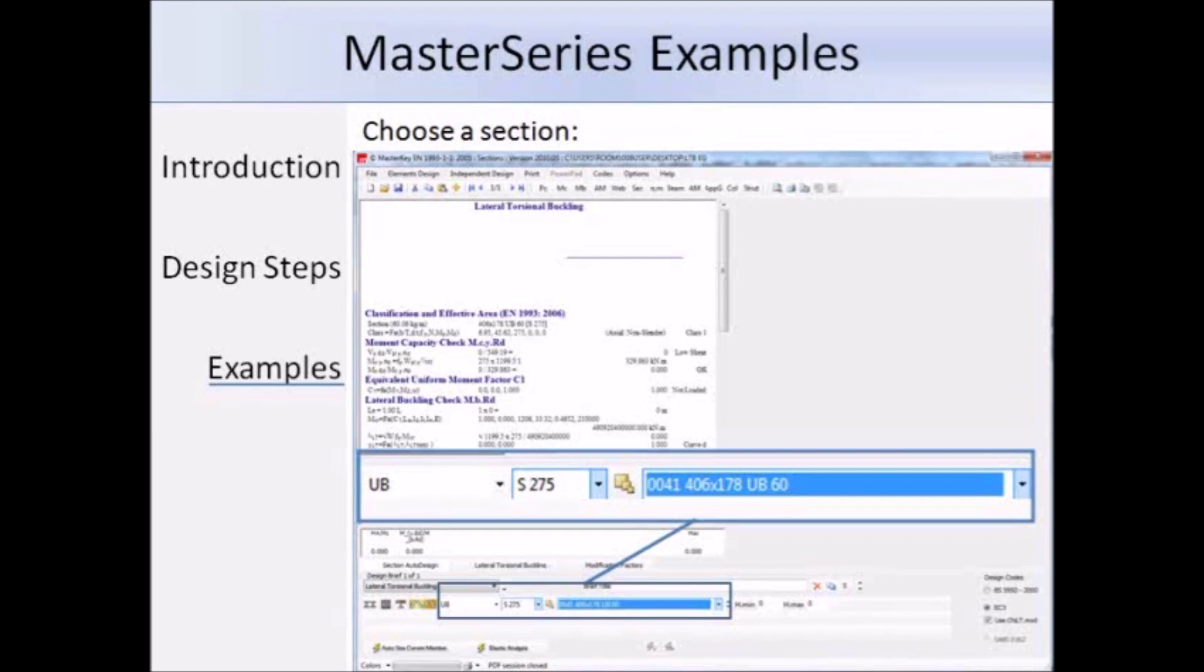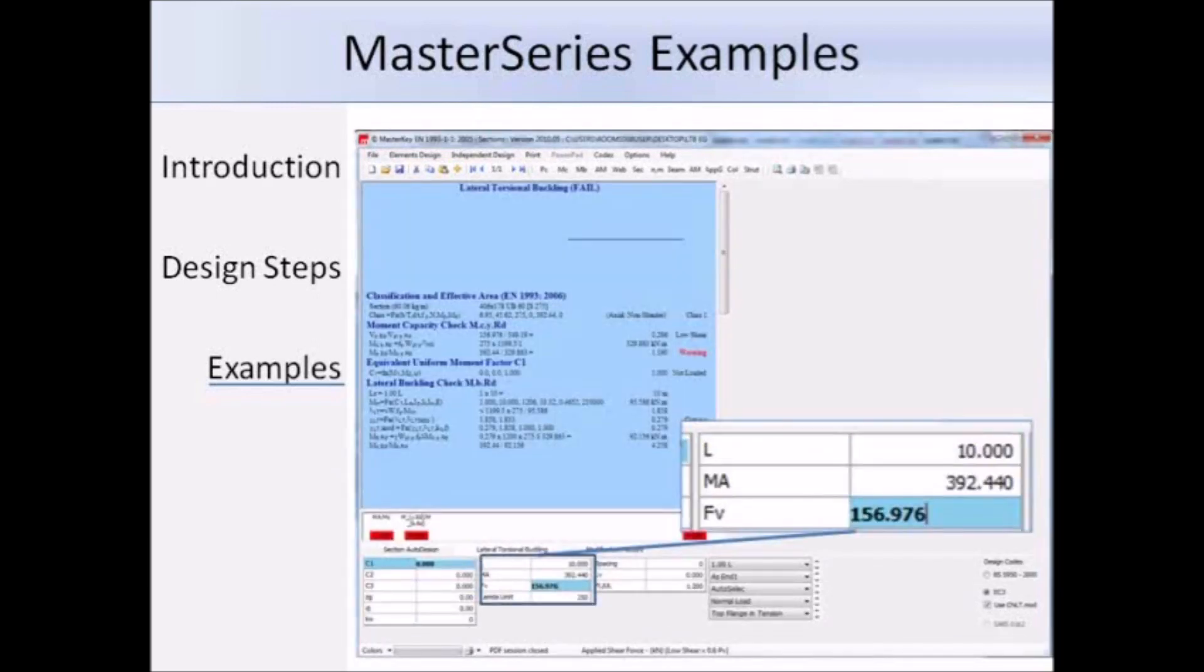So we can choose any section that we want using the drop-down boxes, so here I've chosen a 406 times 178 times 60 UB in grade S275. Under the lateral torsional buckling tab, we can change the length, the maximum moment, and the maximum shear force. We can also change the values of the C1 and C2 coefficients, and the distance between the point of load application and the shear centre zg. For this section that we have chosen, the results screen is blue, and we have this large fail notice at the top of the screen, so we know that the section we've chosen is not adequate.